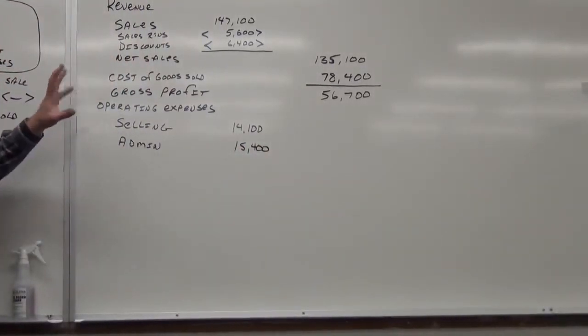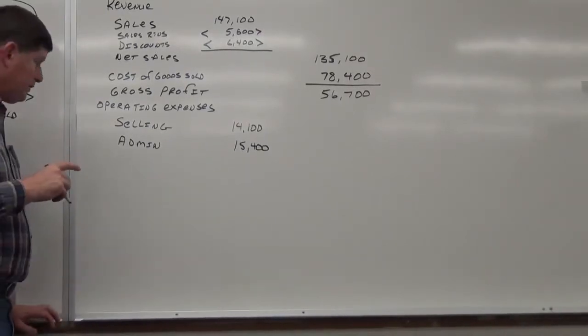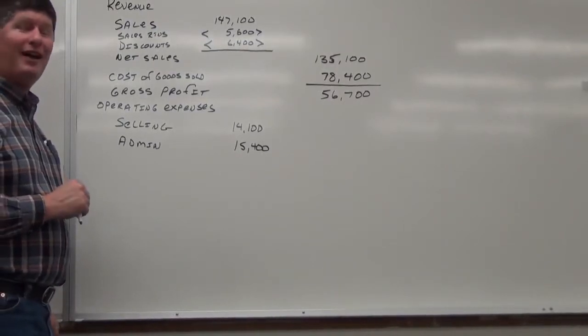So, I have net sales. Less cost of goods sold gives me what? Gross profit. Gross profit. And, if someone could spot me the math again. $56,700. $56,700 is our gross profit. What comes after gross profit? Operating expenses. What kind of operating expenses do we have?